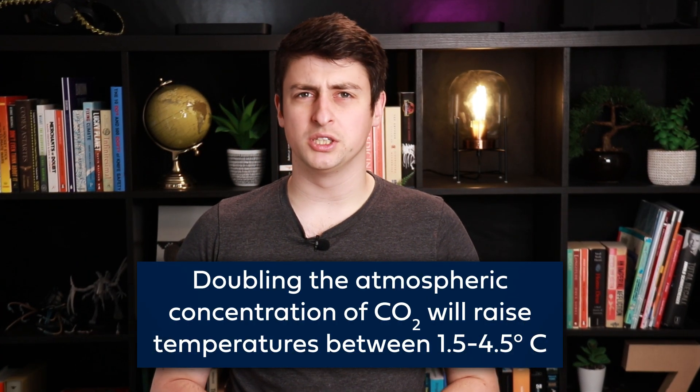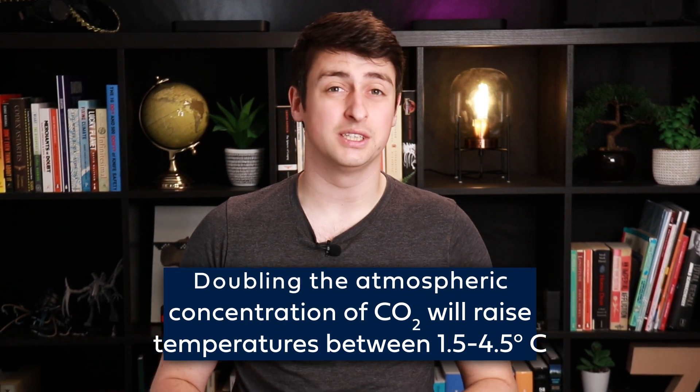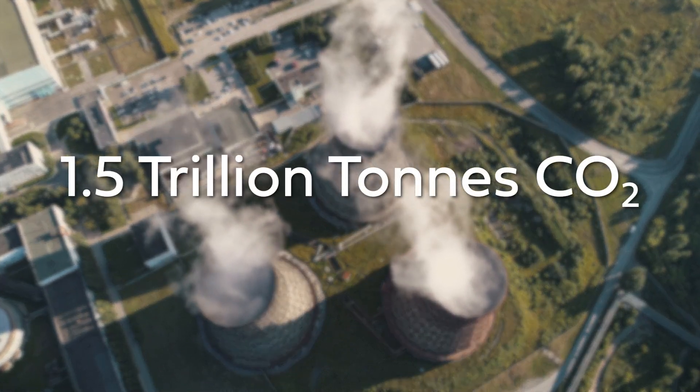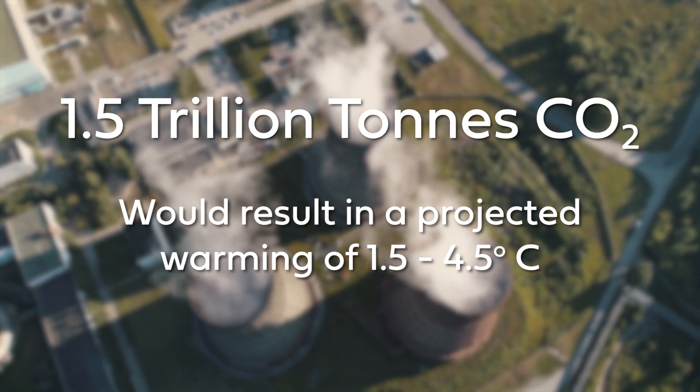We are constantly told that a doubling of the Earth's atmospheric CO2 concentration will result in a warming of between 1.5 and 4.5 degrees Celsius. Practically, that means that if we add an extra 1.5 trillion tons of CO2 to our atmosphere, we can expect that the Earth will warm between 1.5 and 4.5 degrees C.